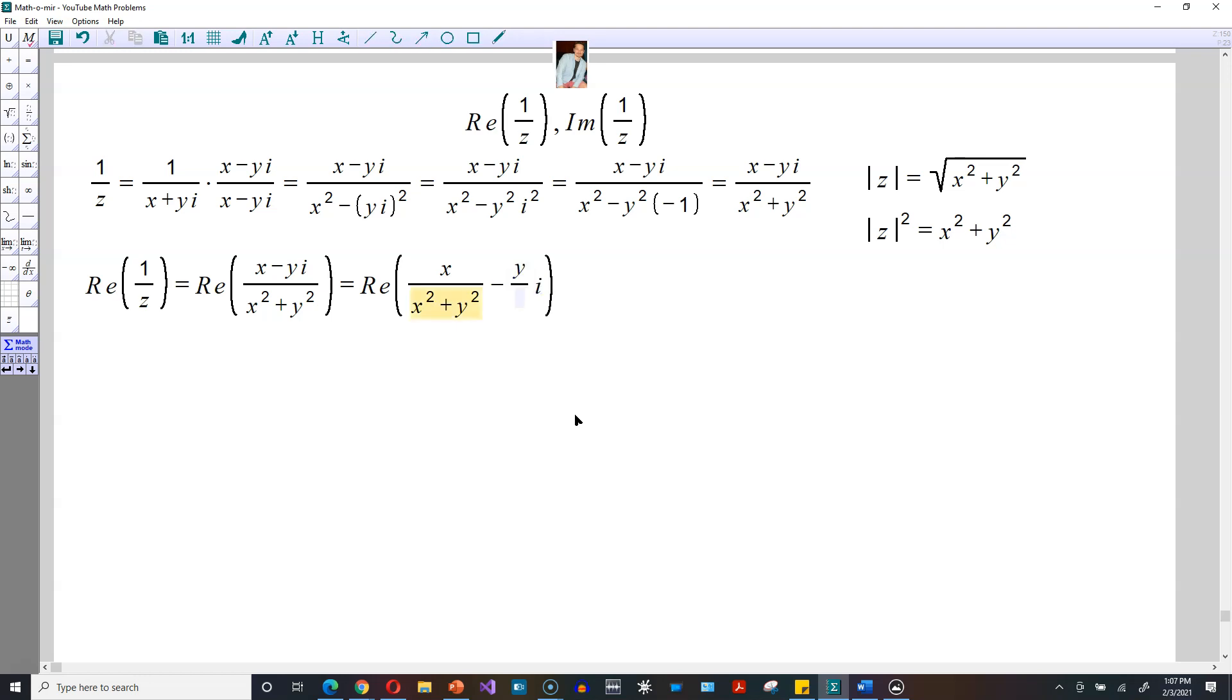And then picking out the real part, that's the one without the i, that would be simply equal to x divided by x squared plus y squared. But x by itself is the real part of the number z.